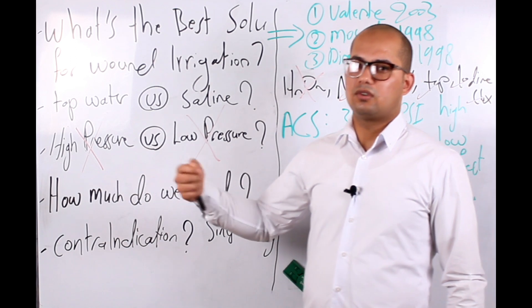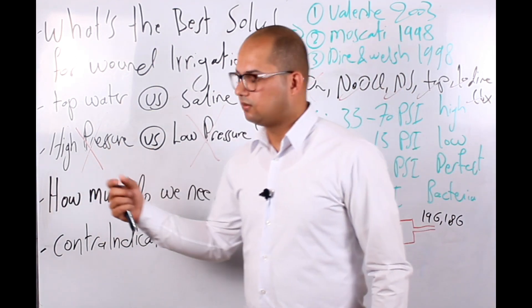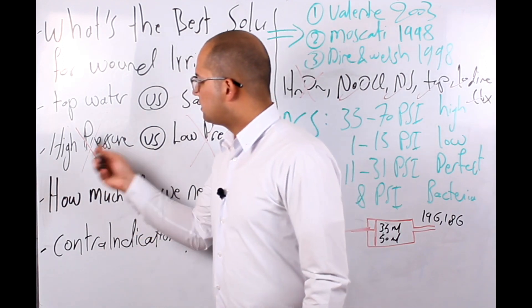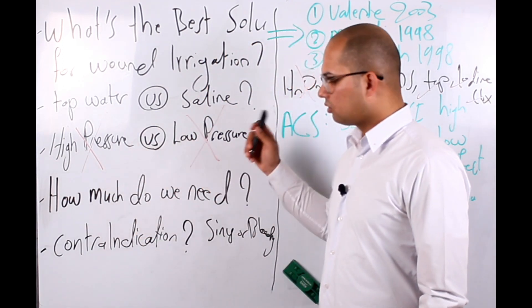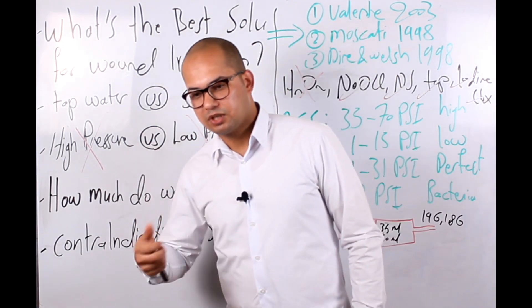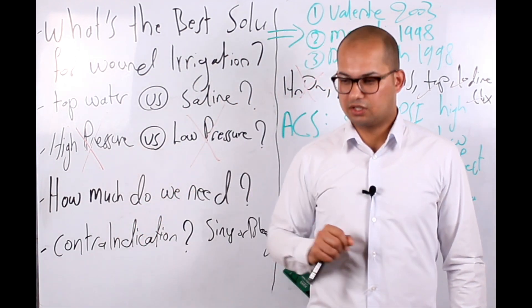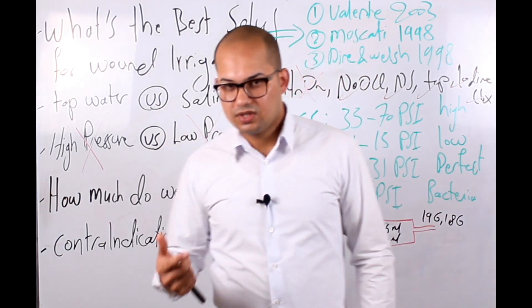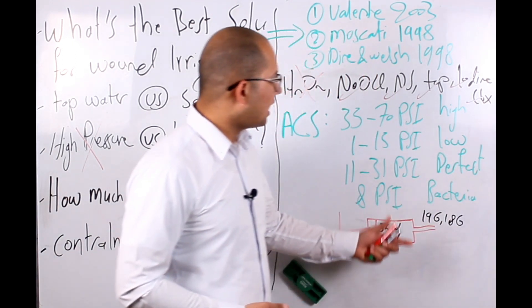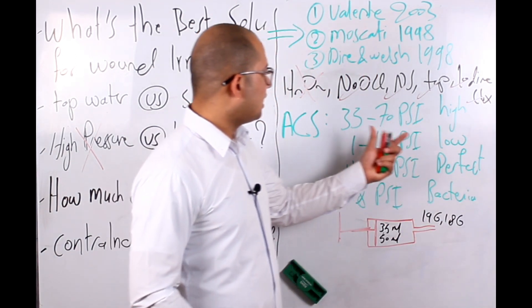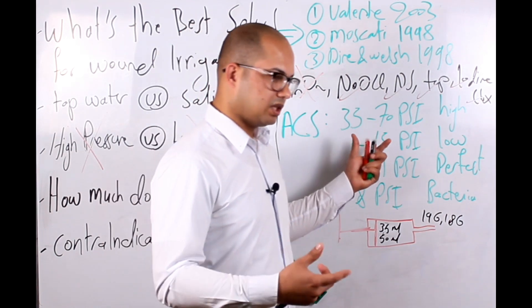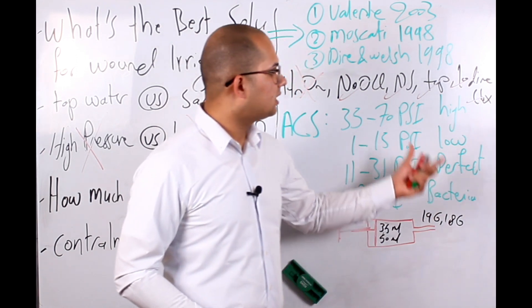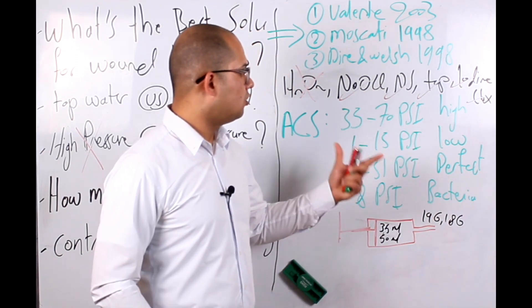Now let's discuss pressure: high pressure or low pressure. How much pressure should we use during irrigation? Honestly, the American College of Surgeons, they defined high pressure as if you deliver a pressure from 35 to 70 PSI during irrigation. This is considered a high pressure. Low pressure from 1 to 15 PSI.